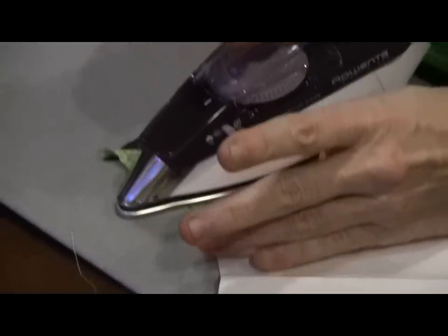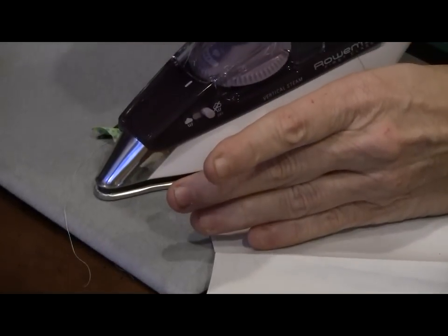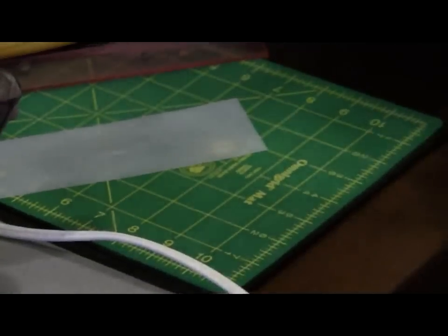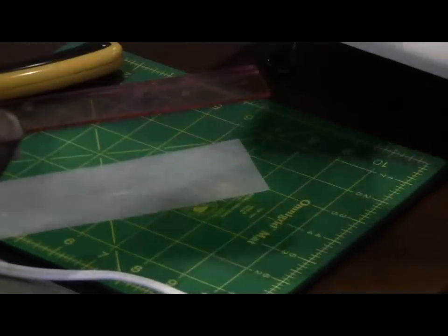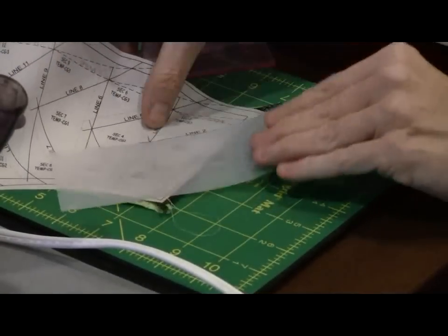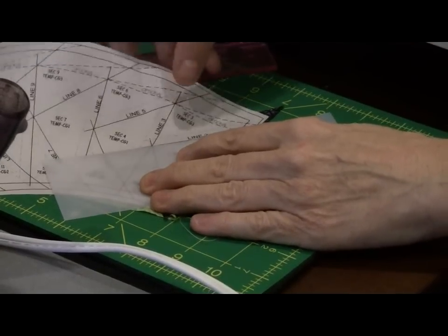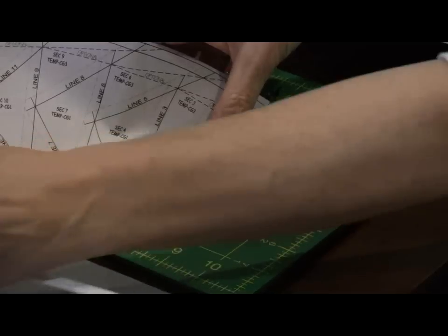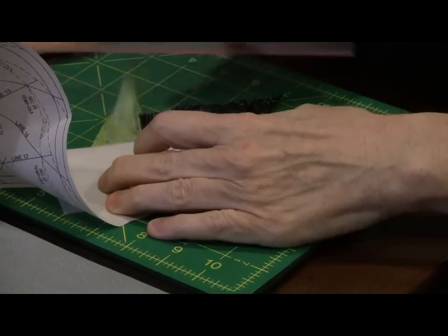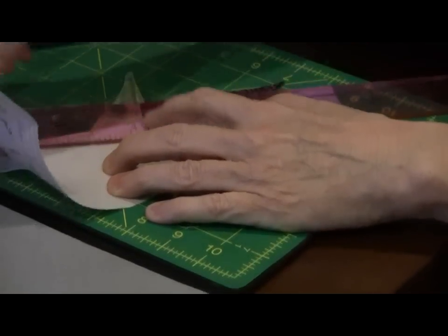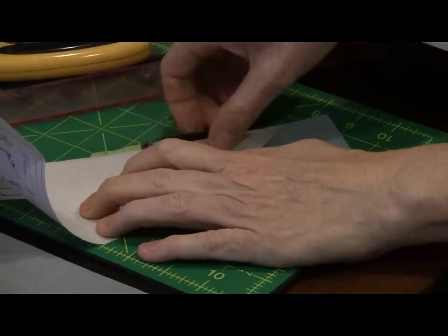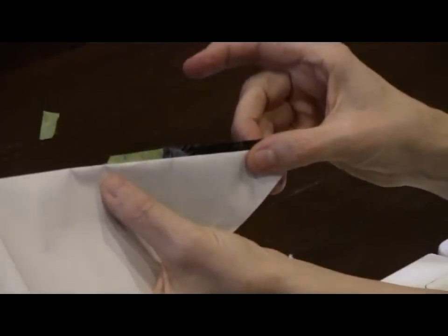We press where we have just sewn. After we have pressed, we will trim up our next sewing line, which is line two. So we will put our piece down, put our foldback template on the solid line two. We're going to fold back and open up and trim up to a quarter inch seam allowance. And as you can see, there's the quarter inch seam allowance.